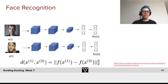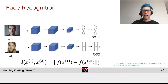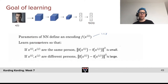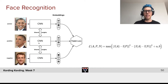In a Siamese network, one photo goes into a ConvNet and produces a vector. Another image goes through the same neural network and produces a vector. We define a distance between the two images as the L2 norm between those two output vectors. The goal is to learn the network parameters so that if the two photos are of the same person, the distance is small, and if the two photos are of different people, the distance is large.